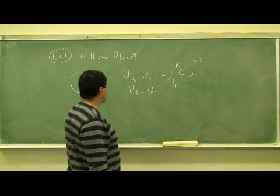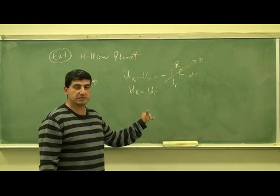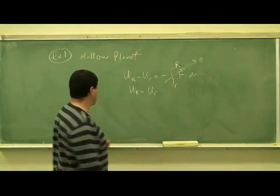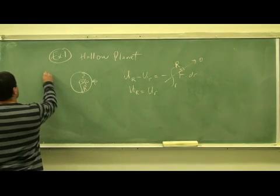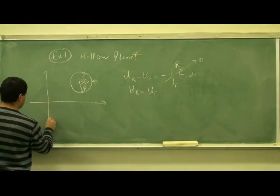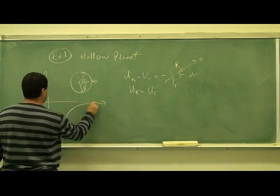So therefore, the potential energy inside of a planet, inside of a hollow planet, stays the same as the potential energy at the surface of the planet. So it looks like this case right here, potential energy stays the same, then it goes here like that.